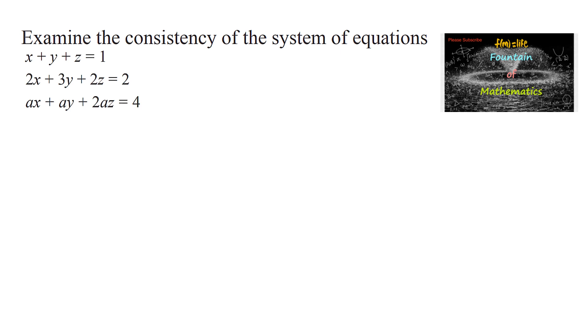The given system we can write in matrix form as: the coefficient matrix [1, 1, 1; 2, 3, 2; a, a, 2a] times the variable matrix [x, y, z] equals the constant matrix [1, 2, 4].